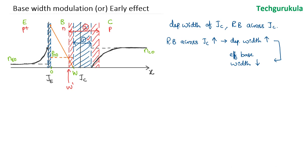This means the amount of carriers injected from the emitter into the base, as they get transported from base to collector, these carriers' chances of recombining would reduce. So we can write: recombination in the base would reduce. As the recombination in the base reduces, the transport factor would increase.